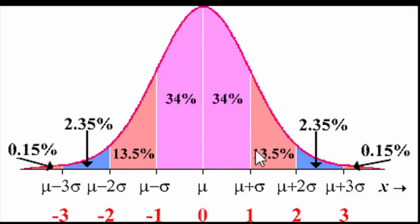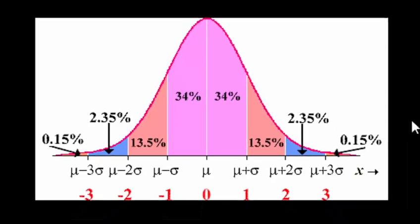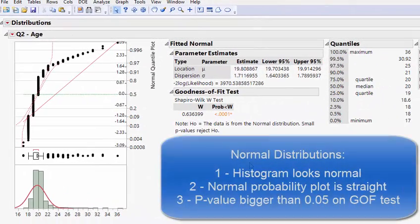When you go outside one standard deviation on each side, that's 16% per tail. Adding 13.5, 2.35, and 0.15 confirms everything from one standard deviation outward equals 16%. Everything should add up to 100%. Lots of practice is needed — there can be many questions asked. If you know these numbers and how they work, you're on the right track for chapter five.